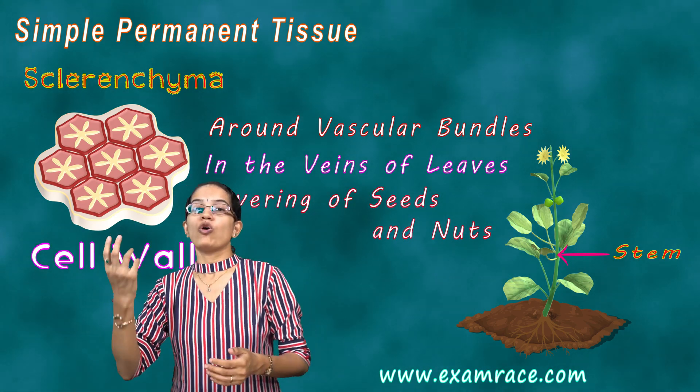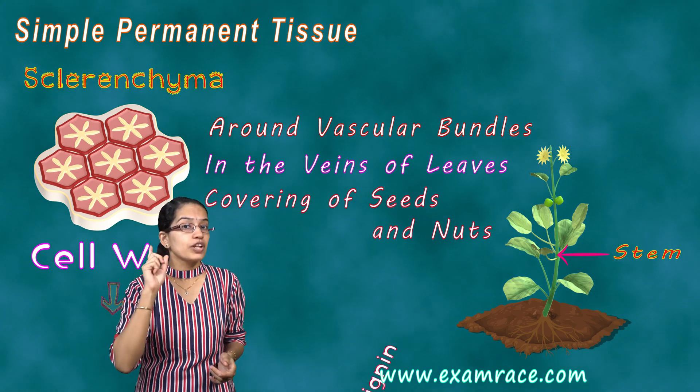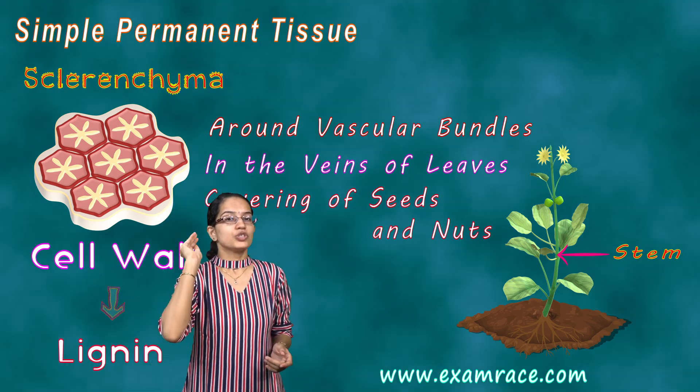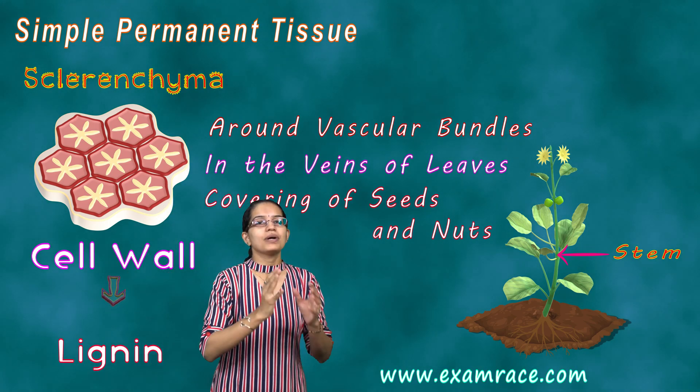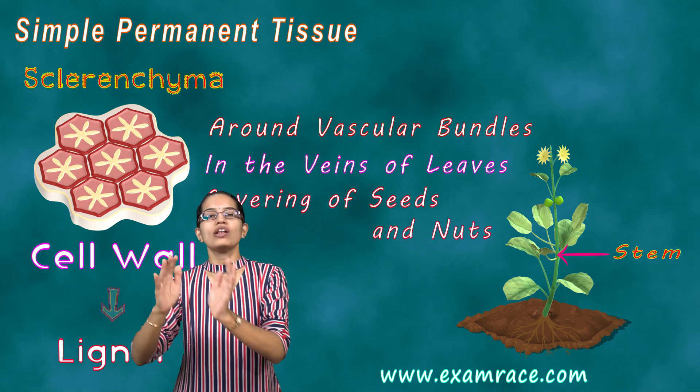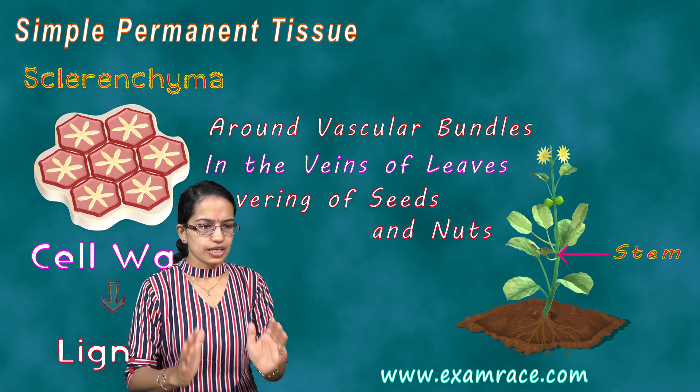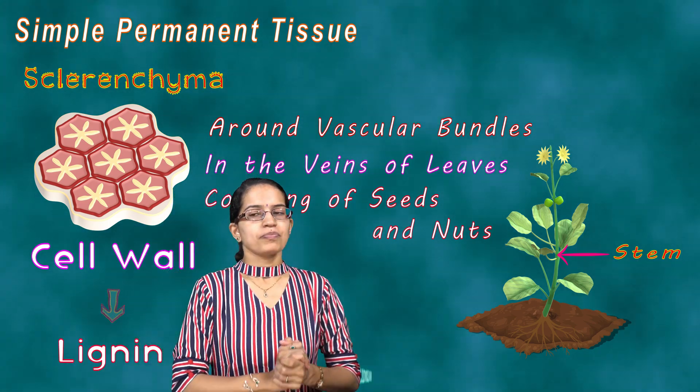The cell wall is made up of lignin. So scurlenchyma — cell wall made up of lignin. Again, very, very important.